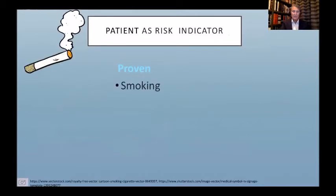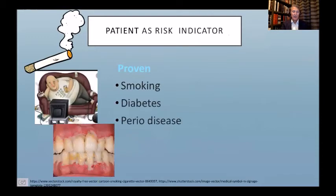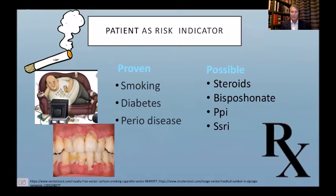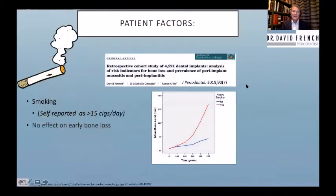Moving to patient factors: proven risk factors include smoking, diabetes, and periodontal disease — that's where the data and literature is very strong. There's weaker data for steroids, bisphosphonates, proton pump inhibitors, and SSRIs. Smoking is really one of the most important things. We published a study looking at the impact of smoking over time in up to a 10-year study.